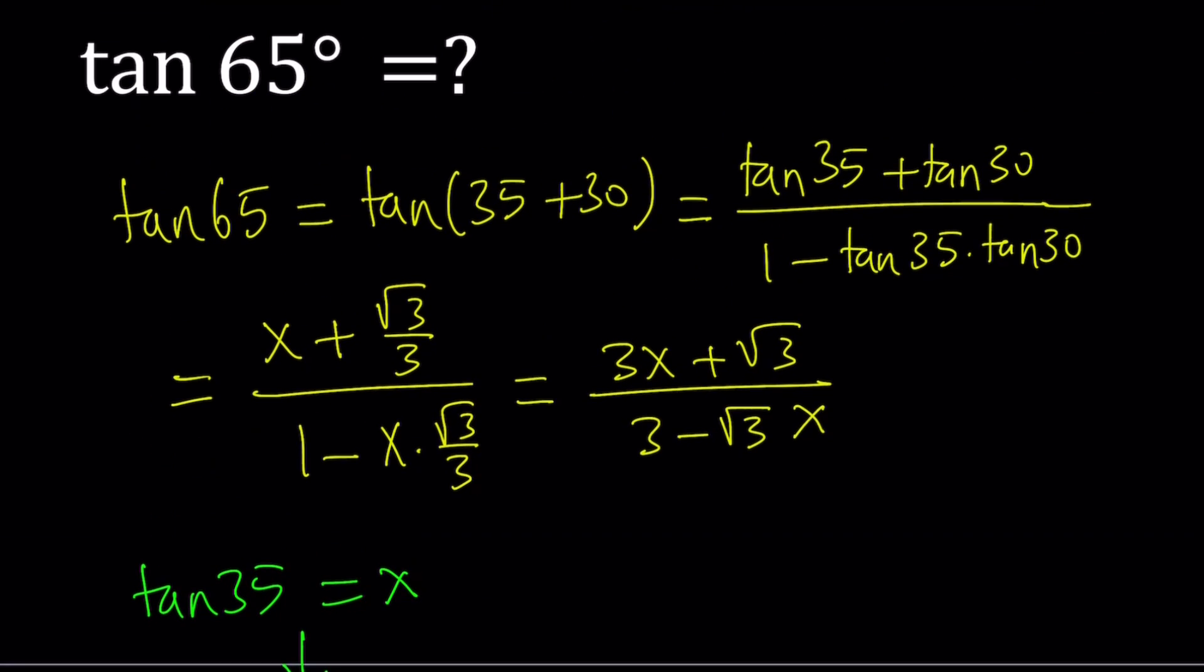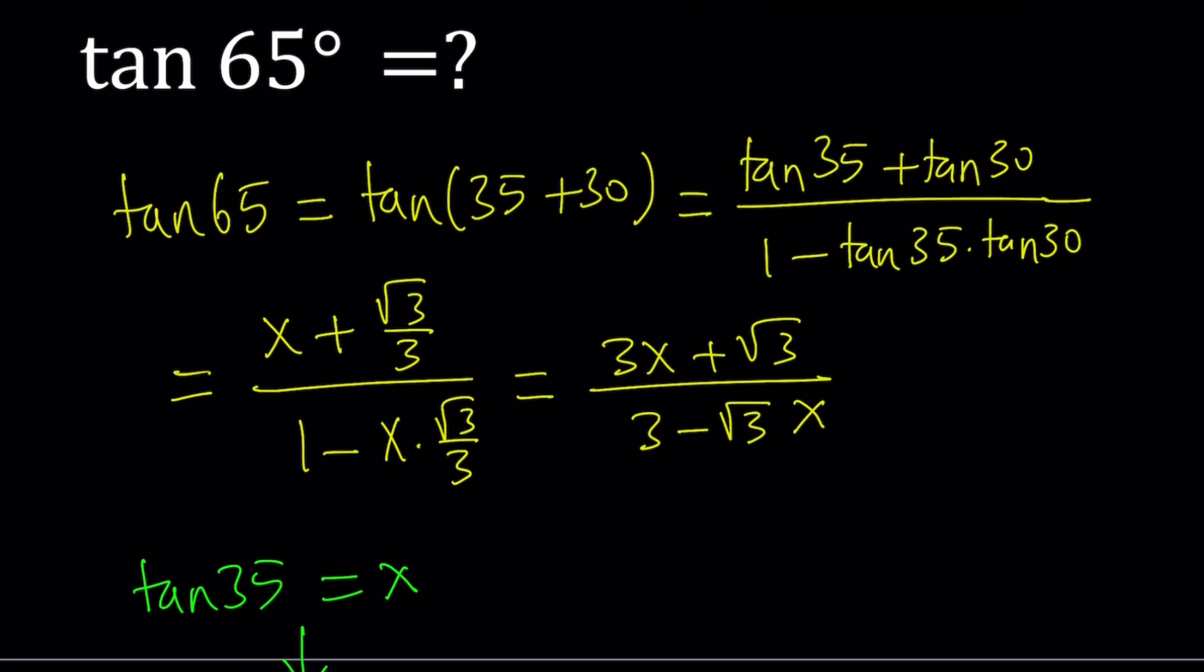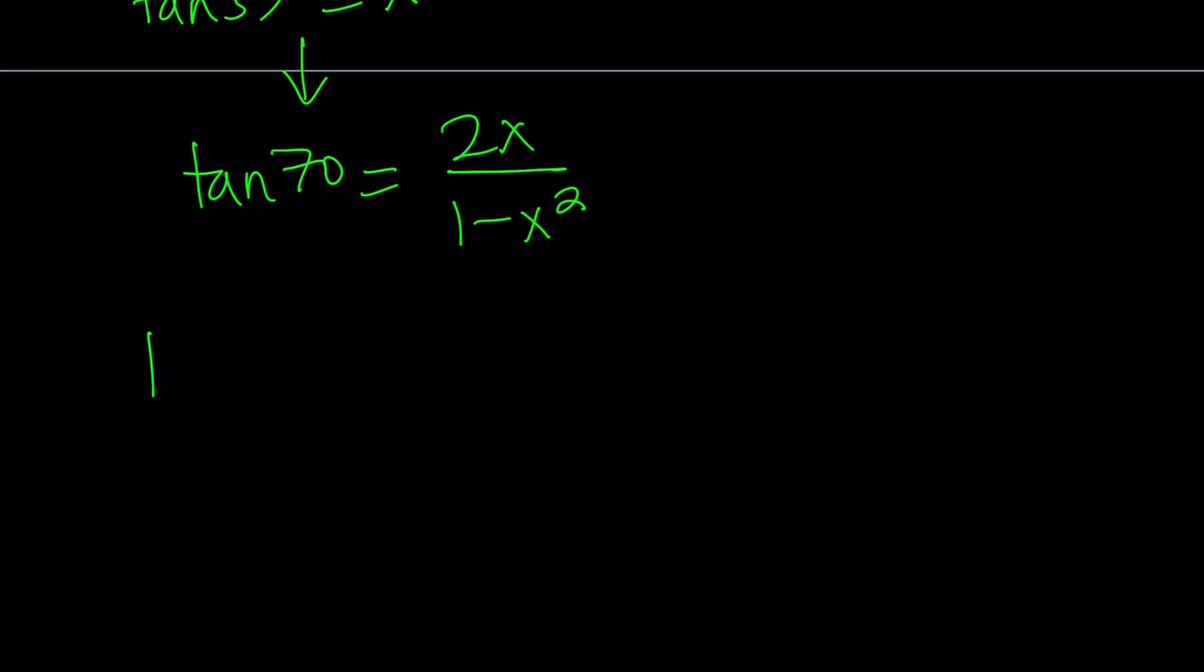And then, now my goal is to get to 65, but I'm going to use 70 as a stepping stone because tangent 65, again in degrees, can be written as tangent of 135 minus 70. Isn't that cool? So, 135 is a special angle. We know the value, hopefully.